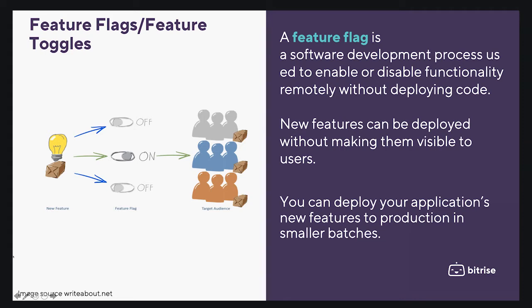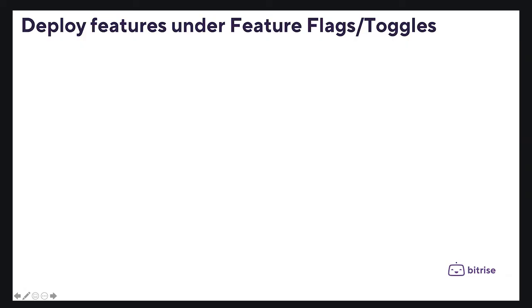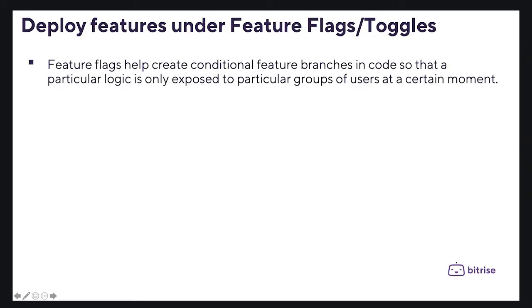A feature flag is a software development technique used to enable or disable functionality remotely without deploying new code. New features can be deployed without making them visible to users, and you can deploy your applications and new features to production in smaller patches.